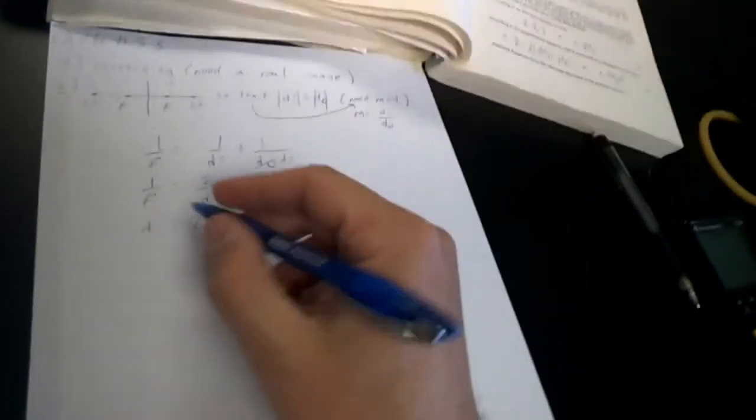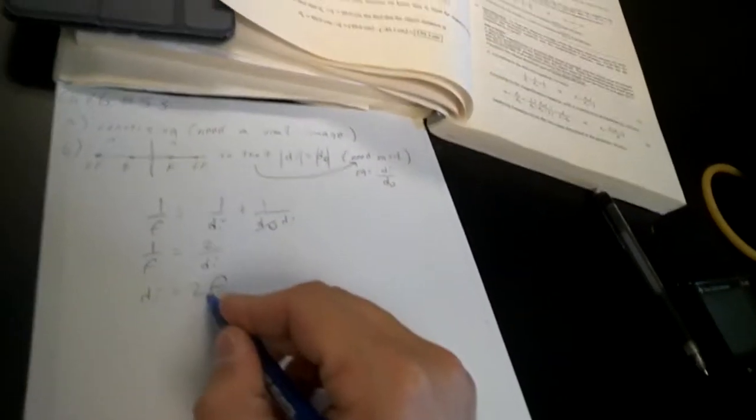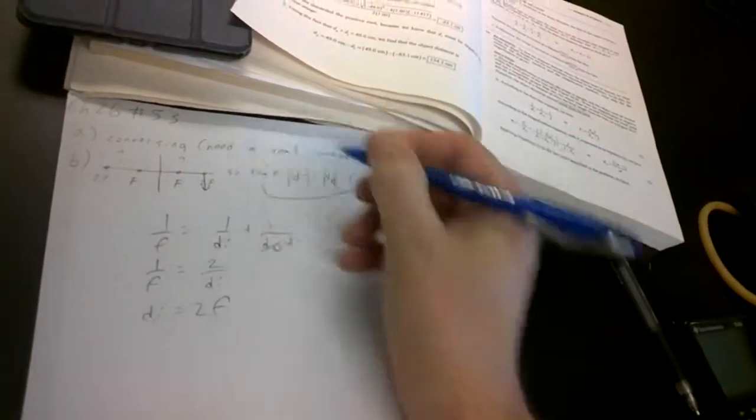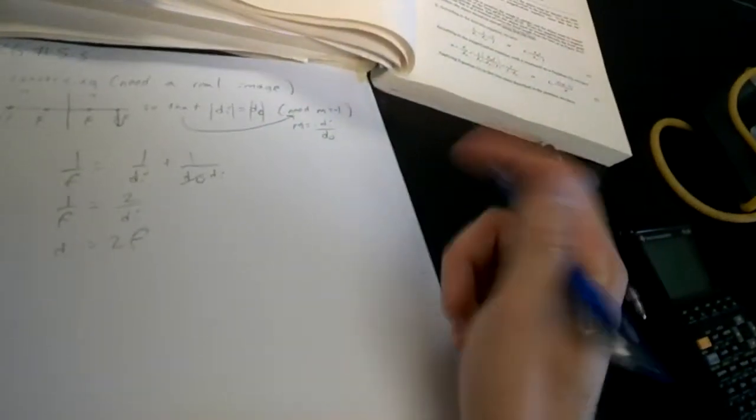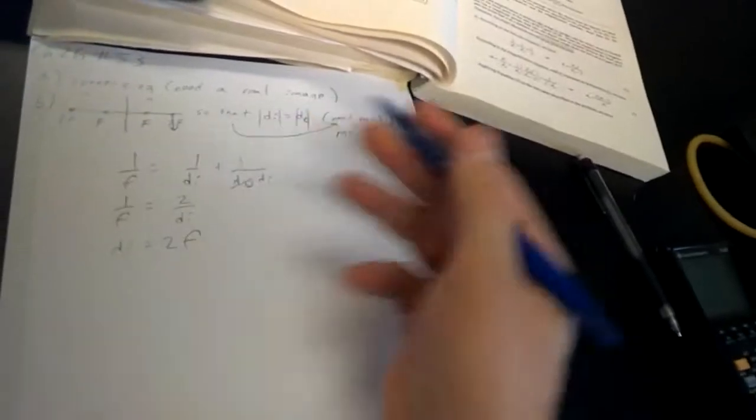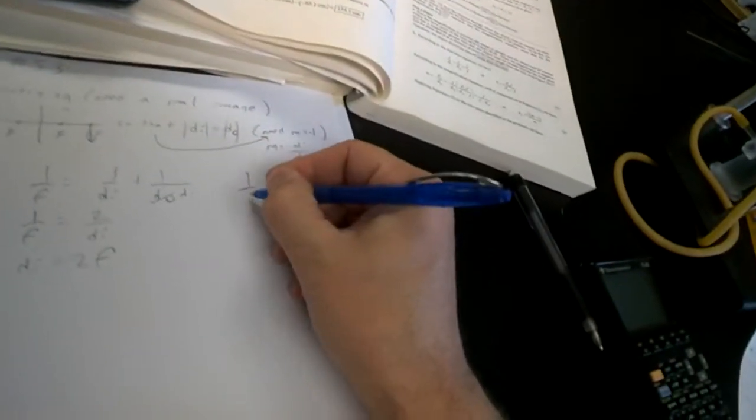All right, back to the problem here. So we figured out that the di is at 2f, so I know I'm going to get something upside down here at 2f. Now the question is where is the object? Well, I could actually ray trace now and see the symmetry - I know what's going to happen - but let's resolve just in case you're not seeing what's going to happen here.